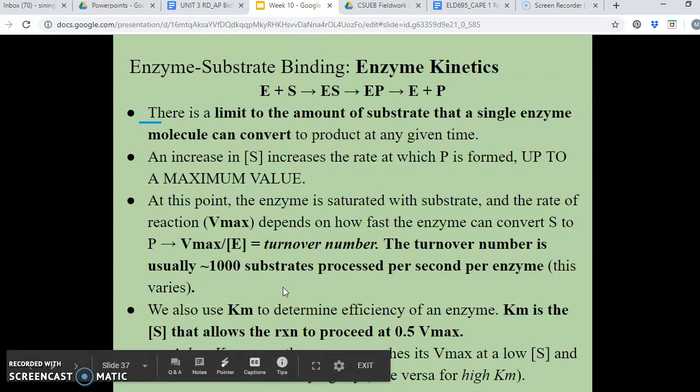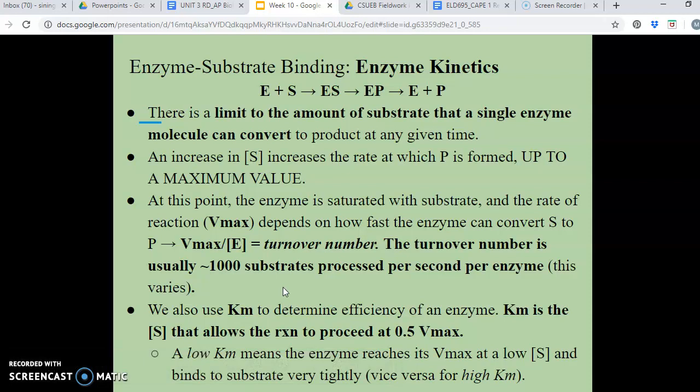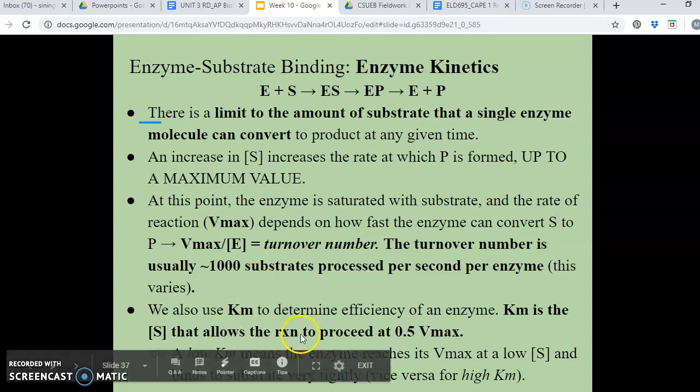Of course, that varies per enzyme. But if you think about it, 1,000 substrates being turned over or processed per second, that's huge, right? That's extremely fast. And we can also use, along with Vmax, we can also use something called Km to determine the efficiency of the enzyme as well.